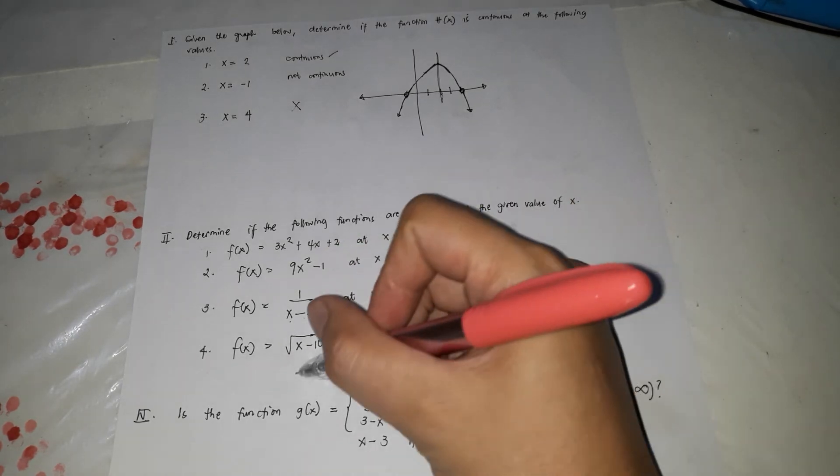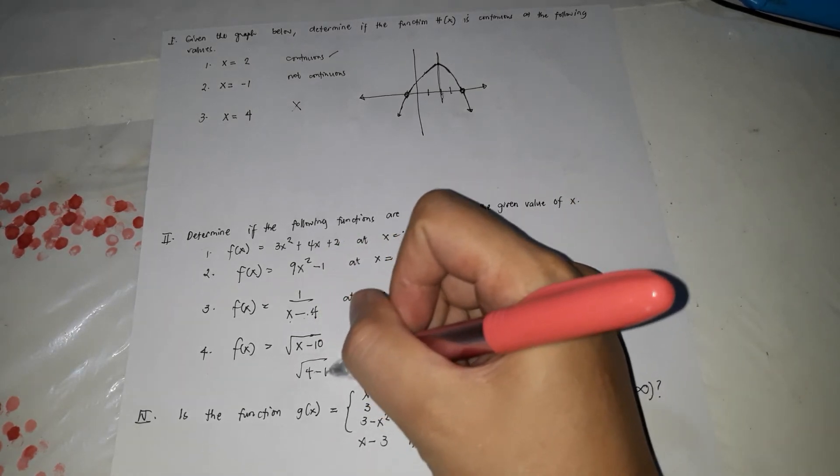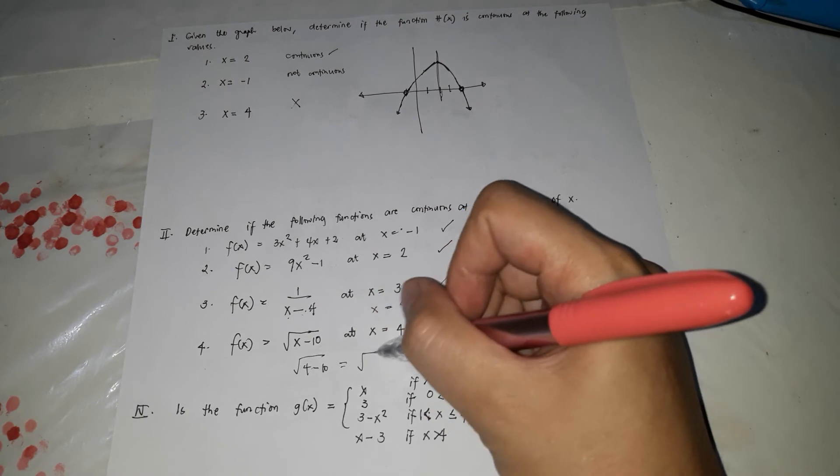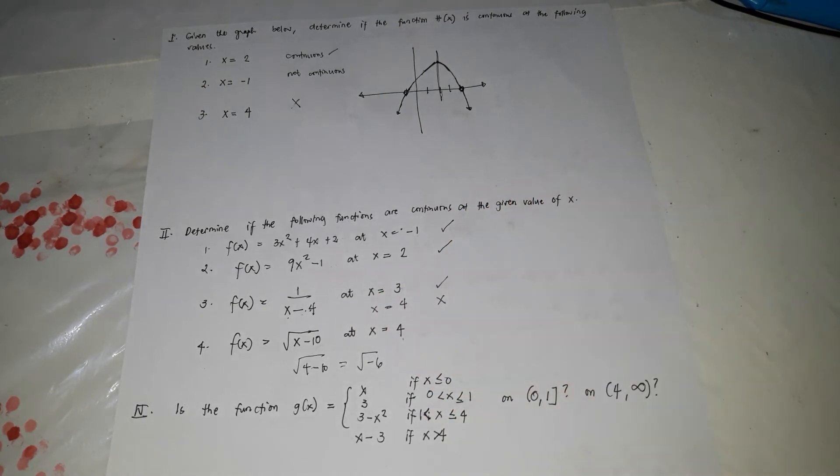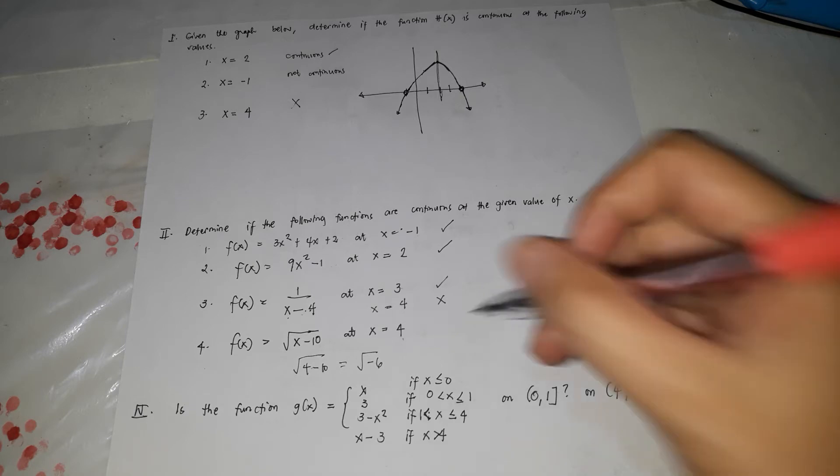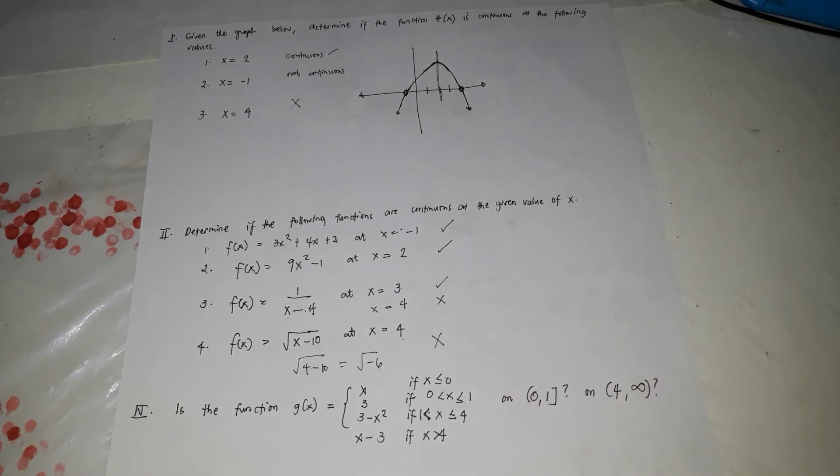So, for this one, magiging 4 minus 10. So, 4 minus 10 is negative 6. And we know that's negative 6. It's an imaginary number because there's no square root of a negative number. So, this is not continuous. So, that's how you're going to determine if it is continuous or not.